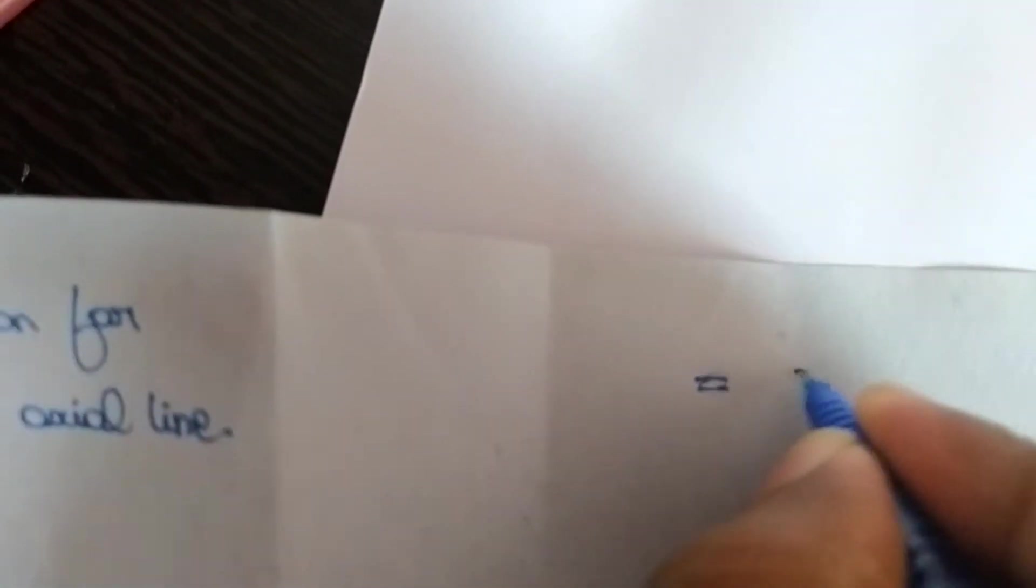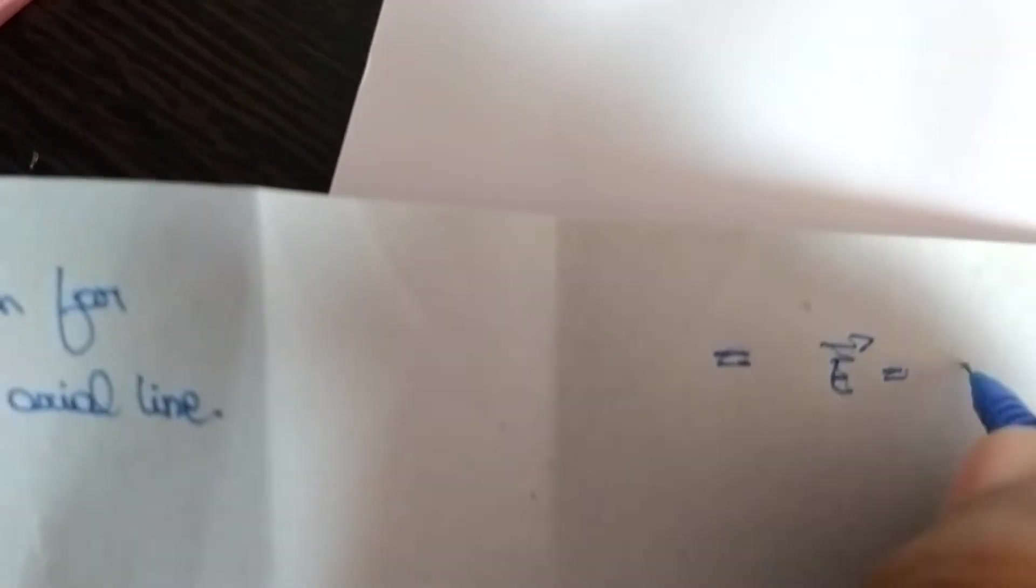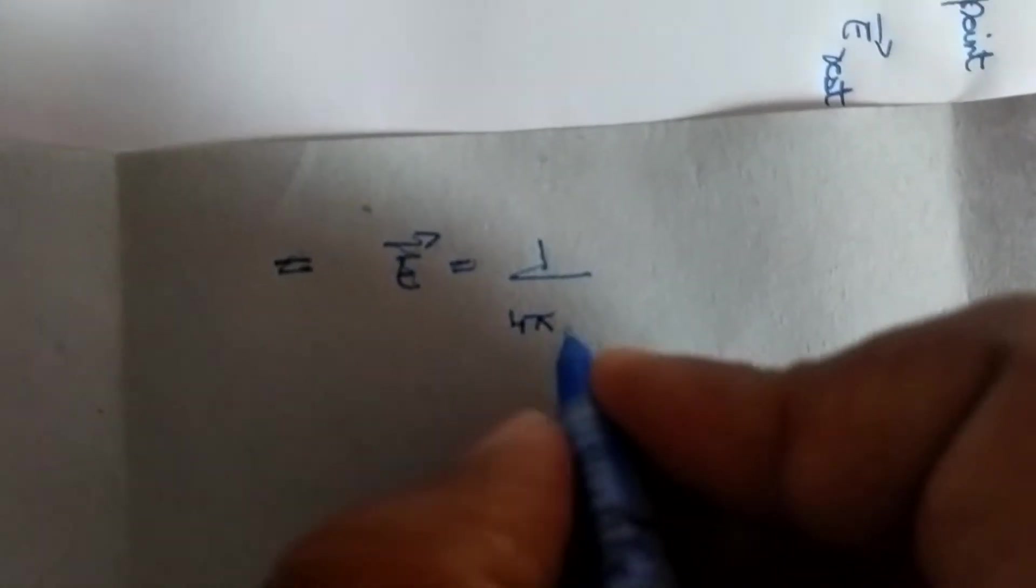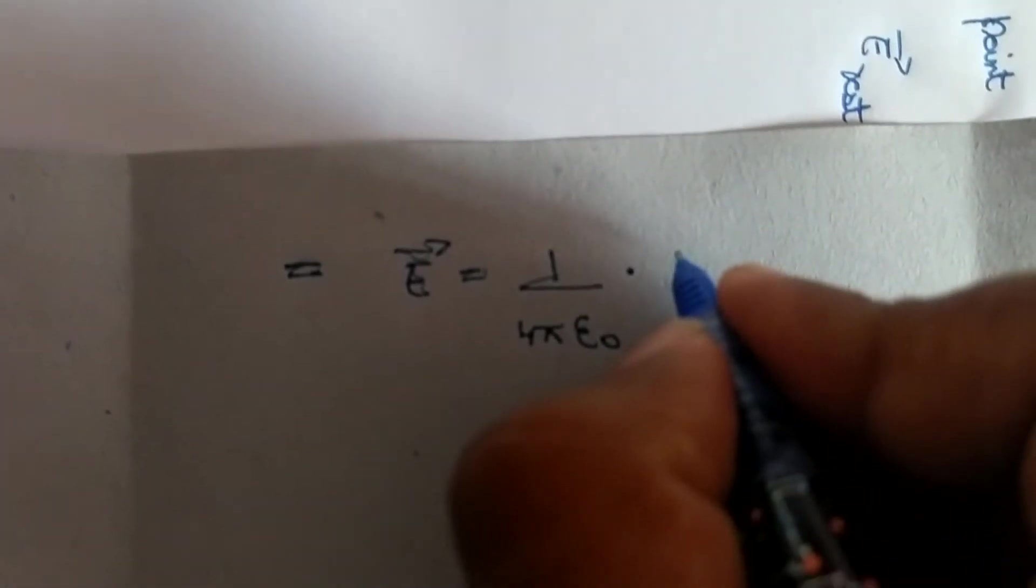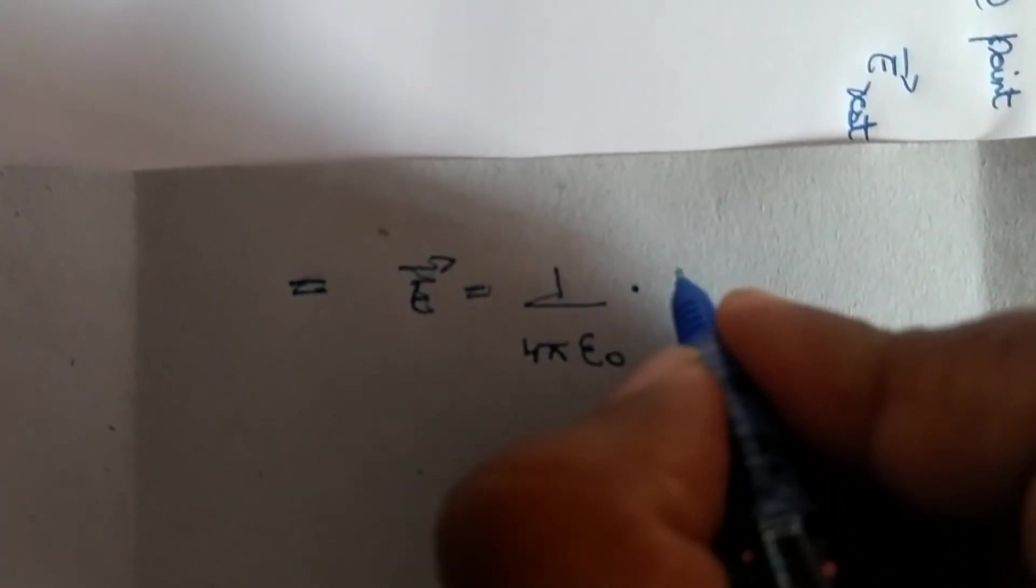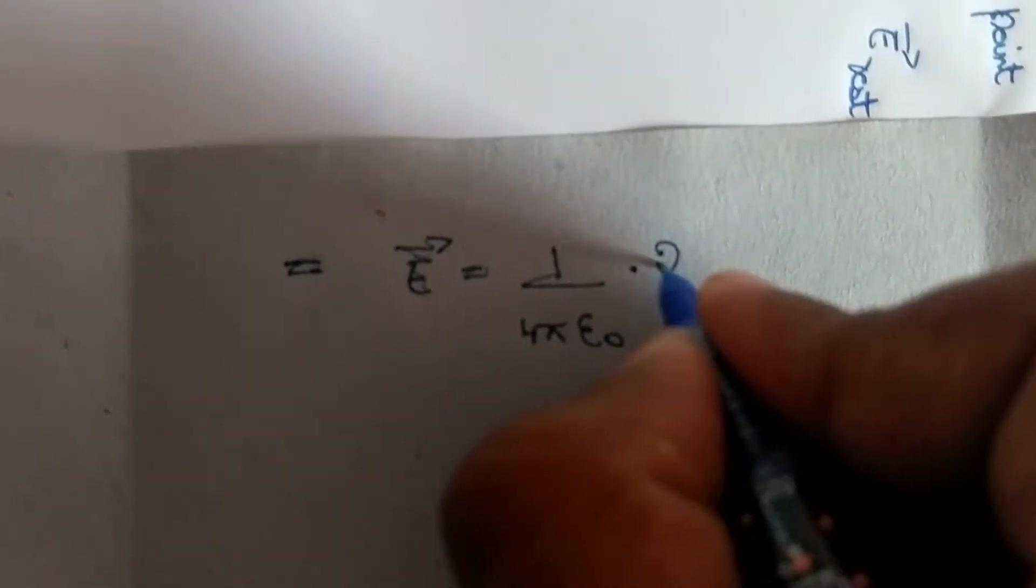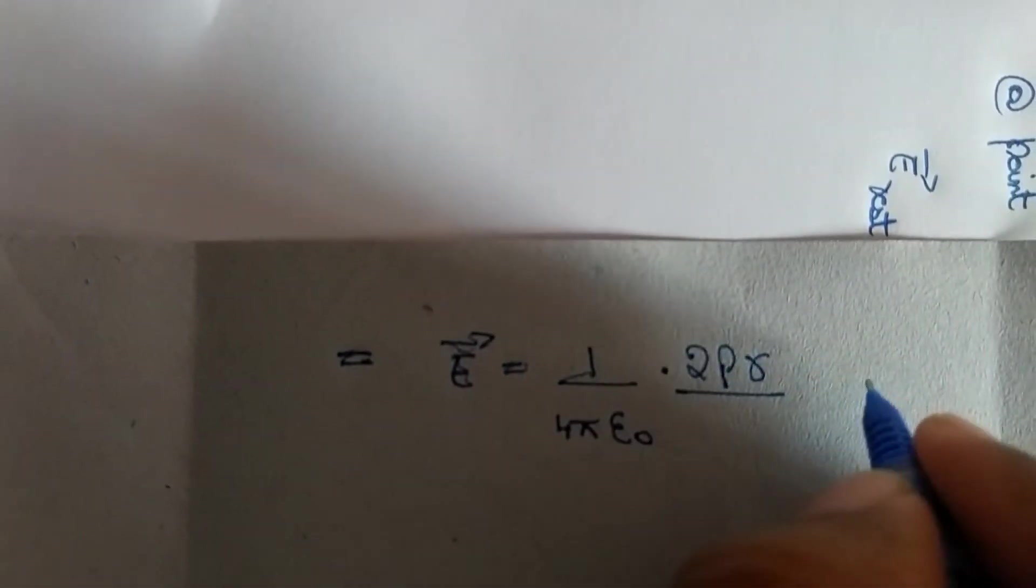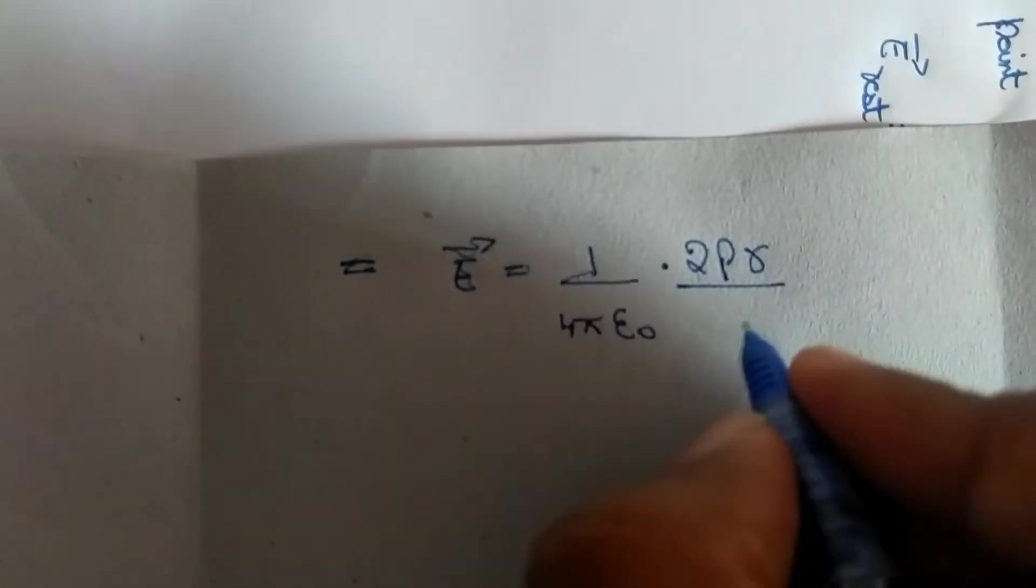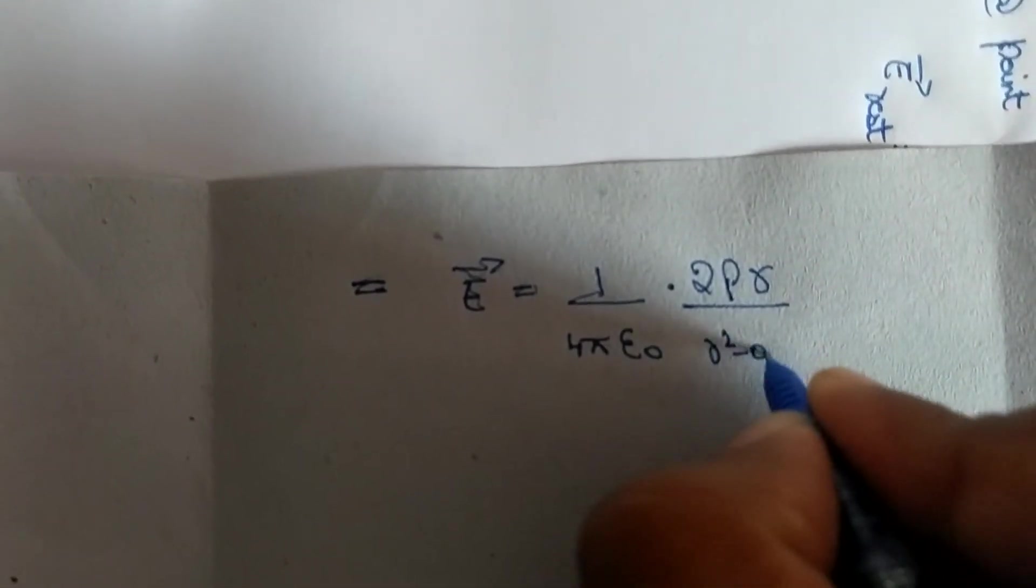We can transform them. 1 by 4 pi epsilon 0 into 2pr. P consists of Q and a, divided by r square minus a square whole square into p cap.